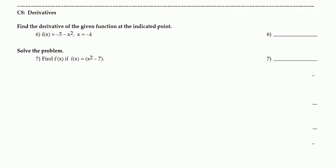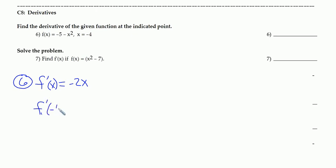Concept 8: we're just finding the derivative at the indicated point. For number 6, the first thing we need to do is find the derivative of f. f prime of x: negative 5 will zero out, and the derivative of negative x squared is negative 2x. So the derivative at negative 4, f prime of negative 4, is negative 2 times negative 4, or positive 8. For number 7, they just want the derivative of f. The derivative of f is 2x, and then the negative 7 will zero out, so it's just 2x.